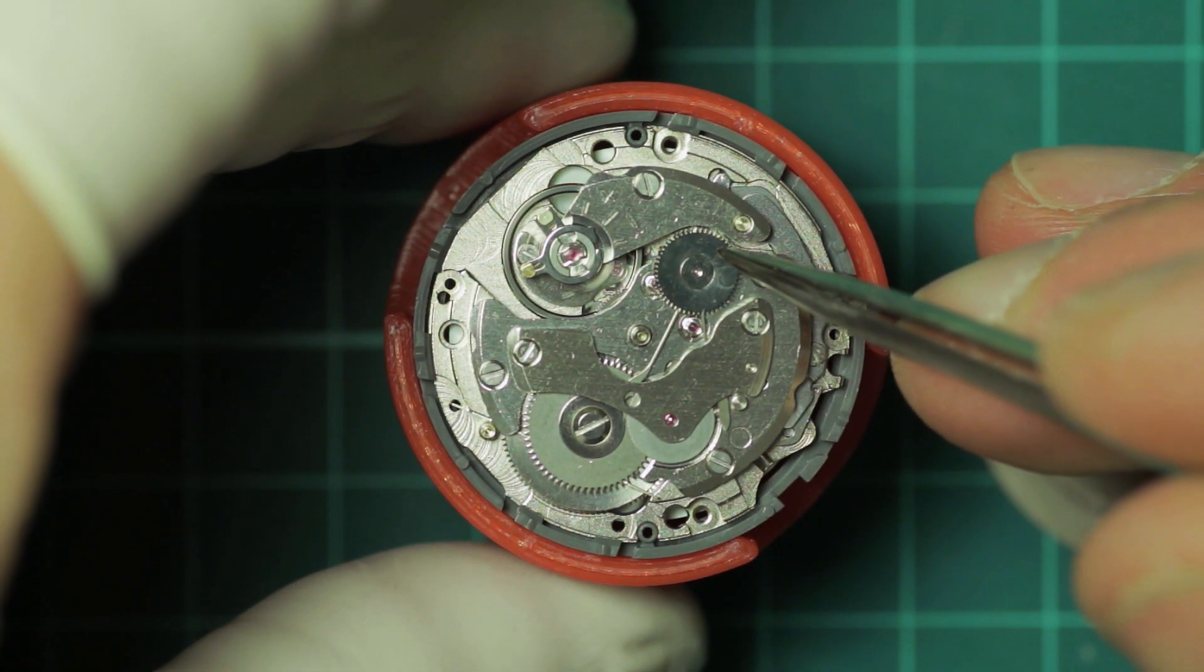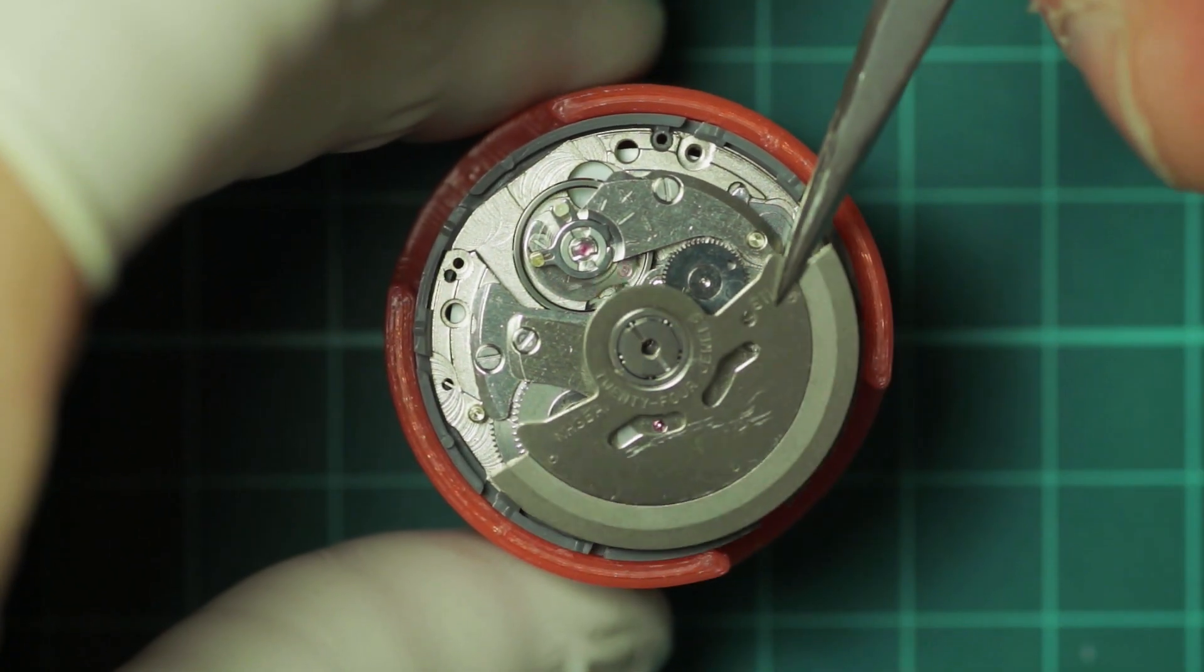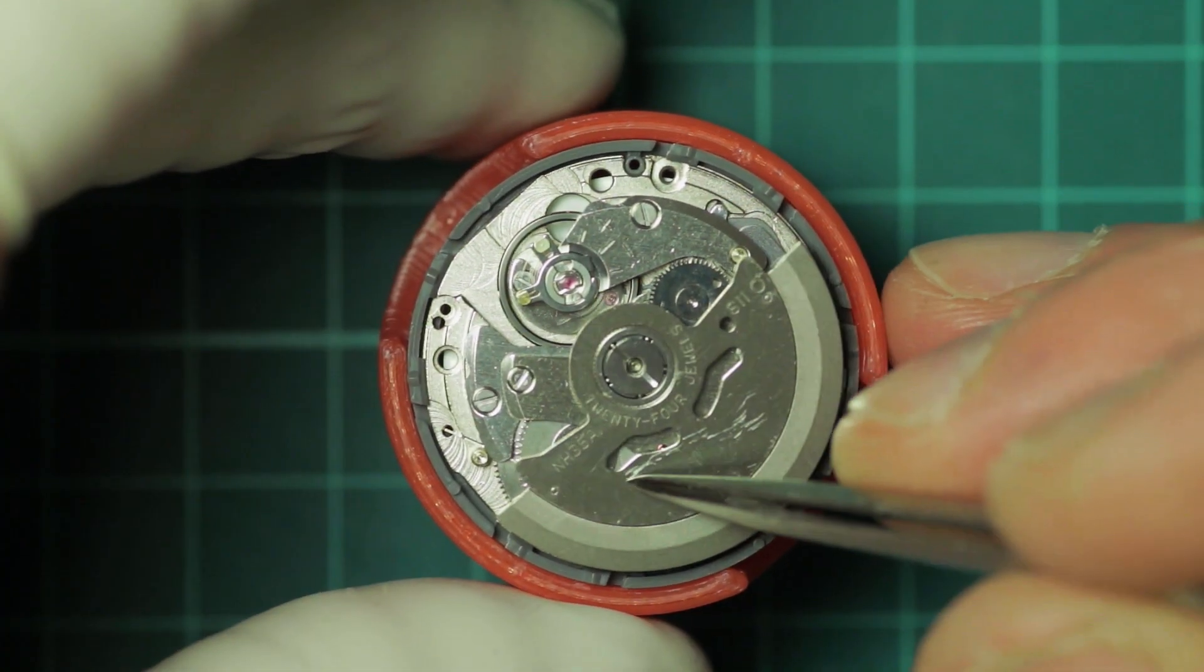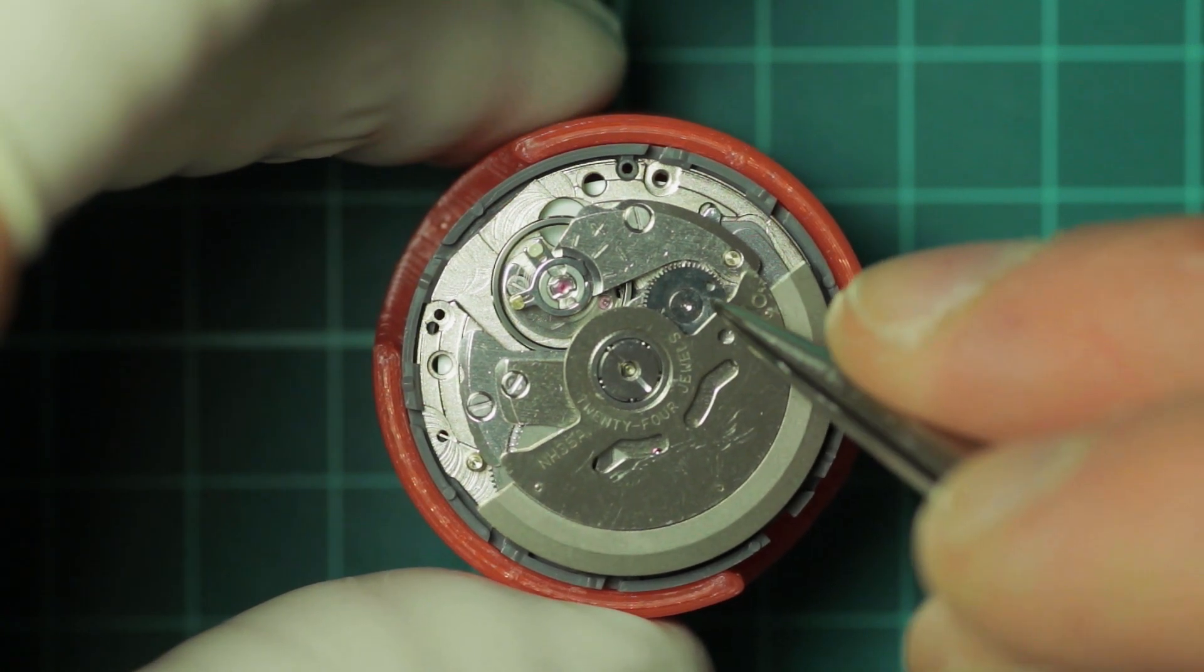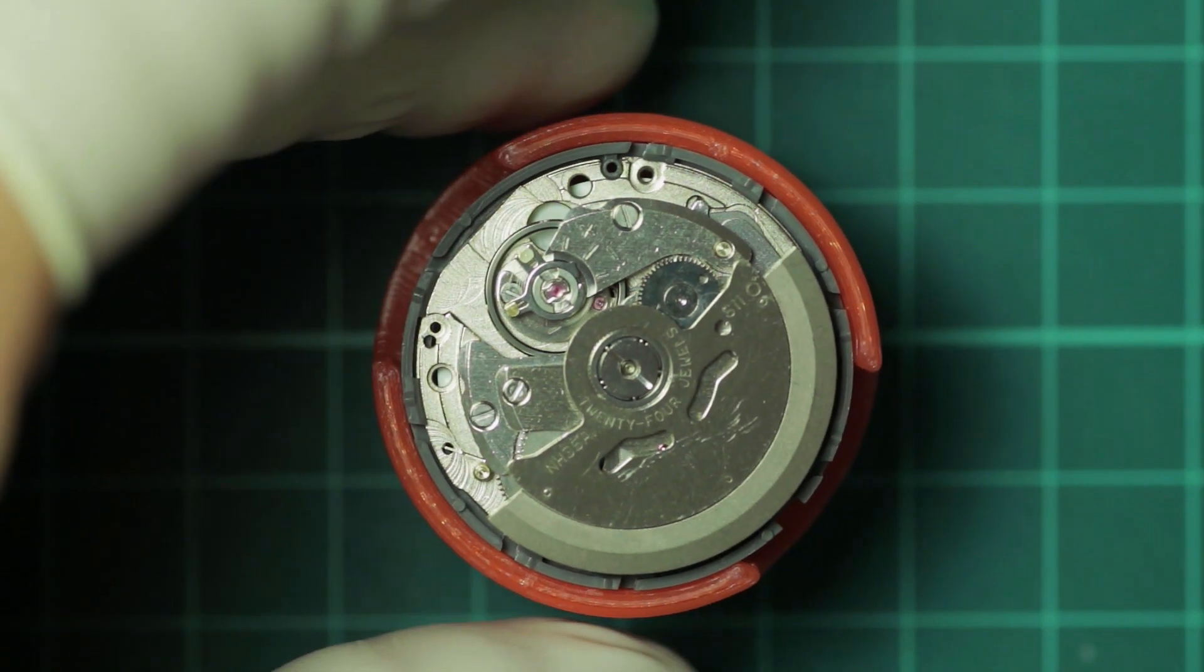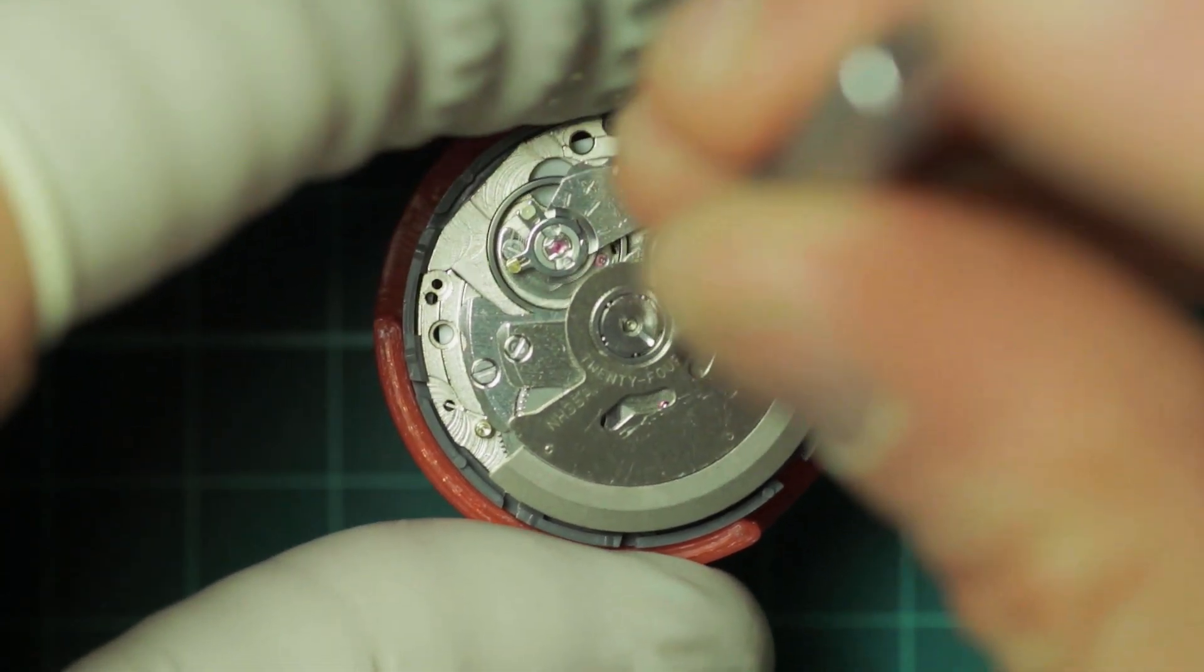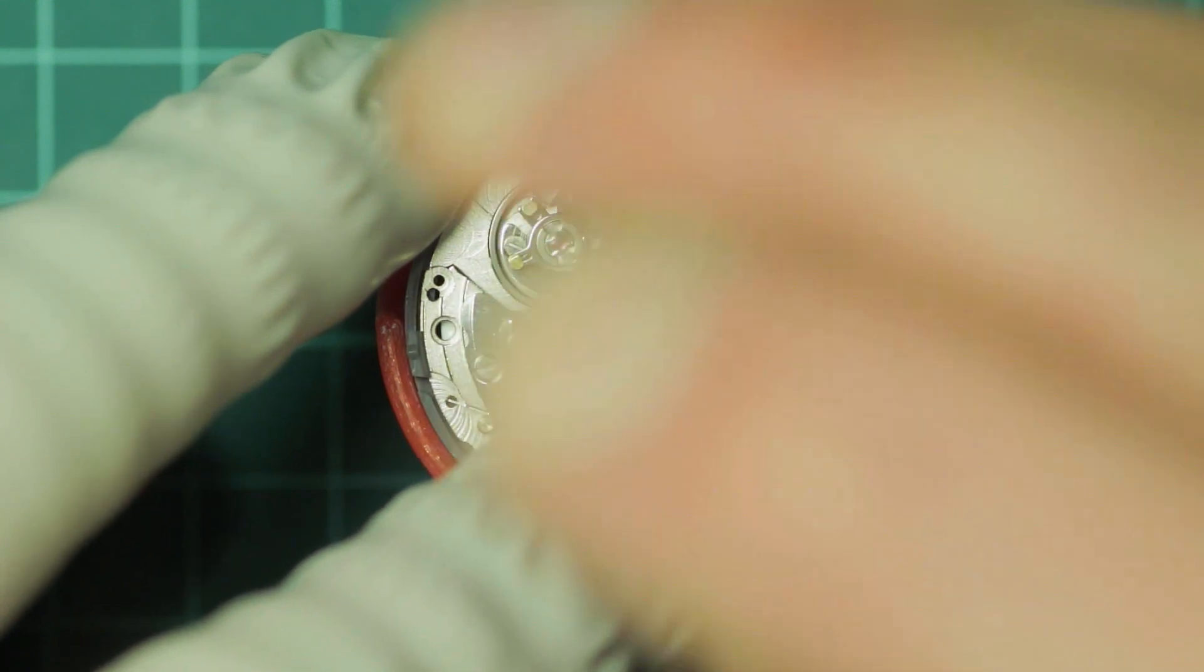One last thing to do is to fit the oscillating weight, and the small dot on the first reduction wheel lines up with the brass pin on the balance cock. And then the tip of the oscillating weight also lines up with that pin. Bear in mind, if you are a right wrist wearer, you want to align this the other way around with the oscillating weight on the opposite side, and this will ensure that you get optimum winding performance.